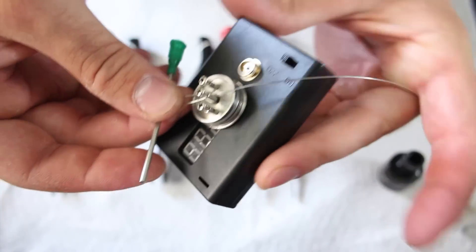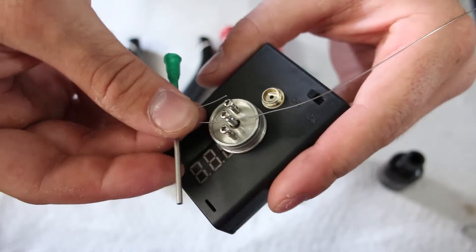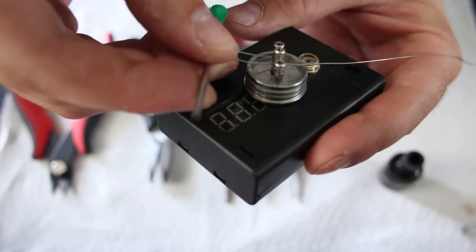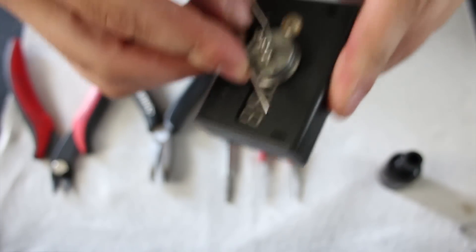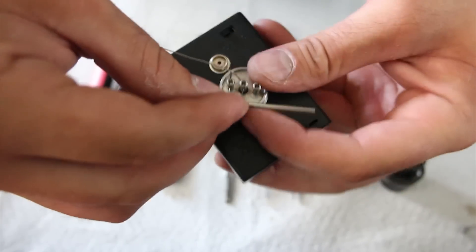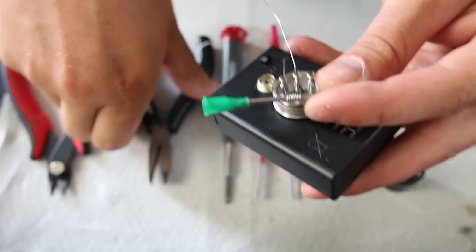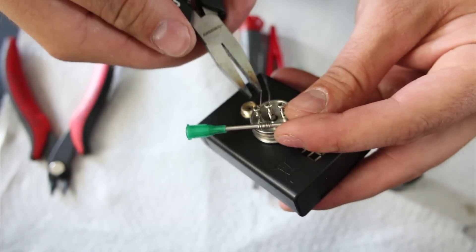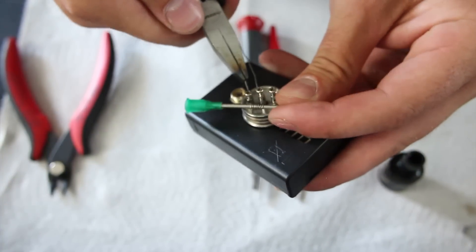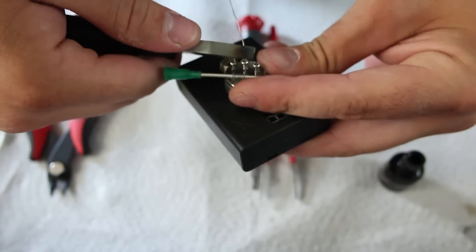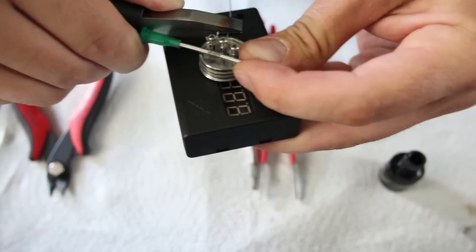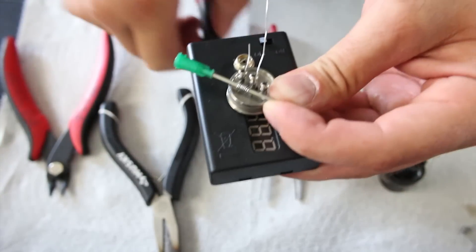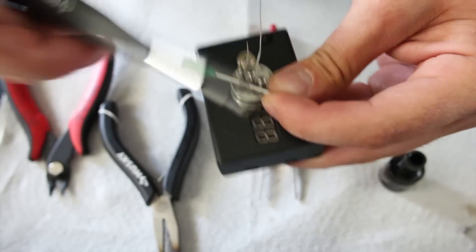And then insert your short lead into the negative terminal. Here you can use your pair of pliers to tighten it up a little bit. Pliers are always handy when working with 24 gauge just because it's so thick.